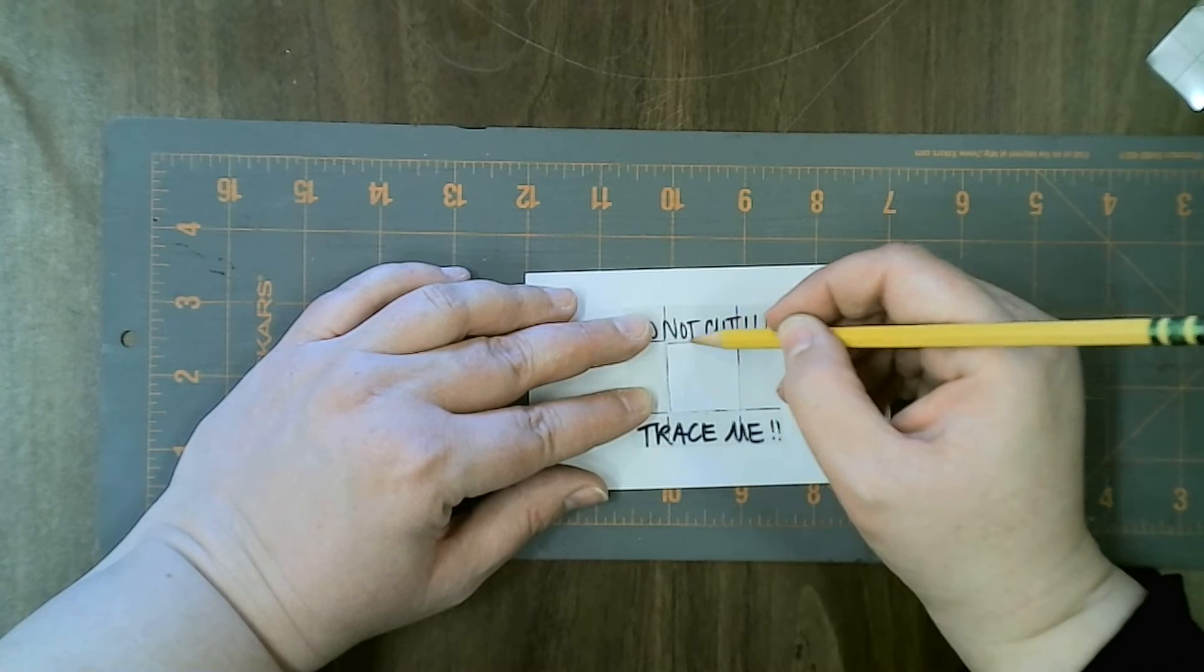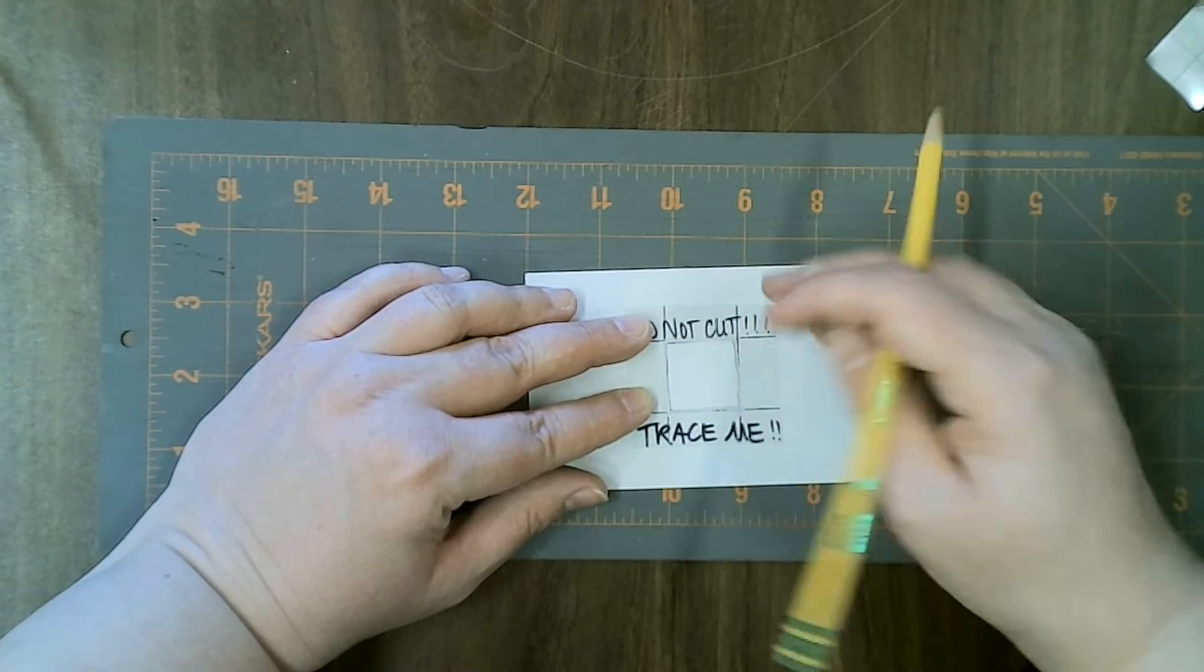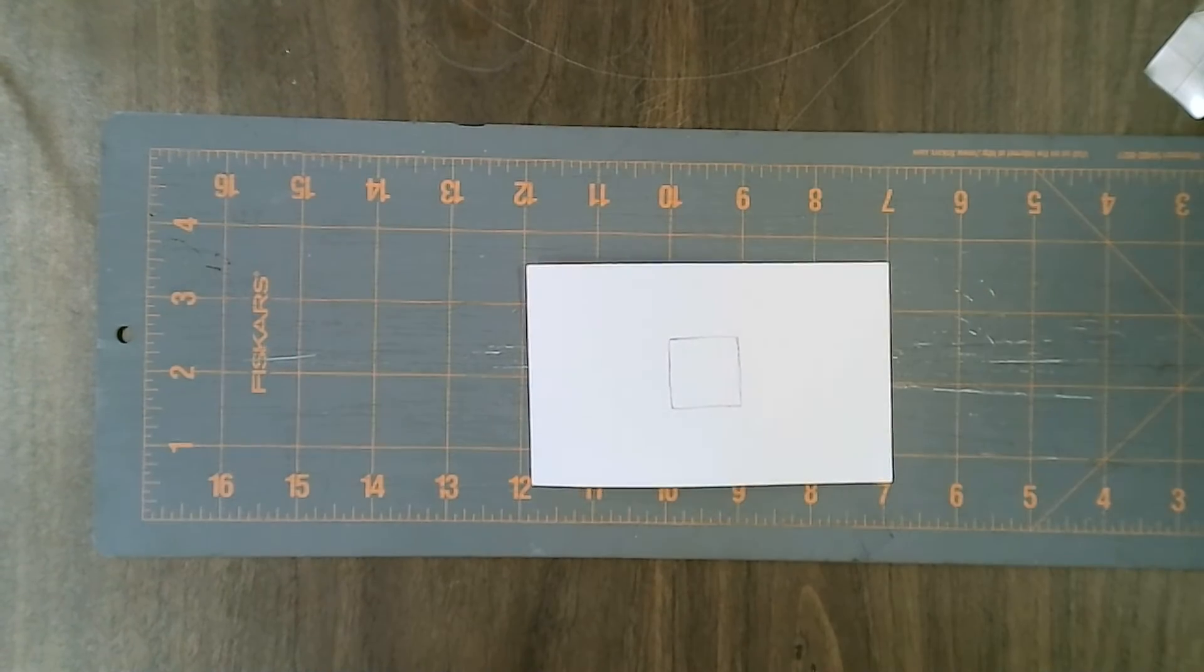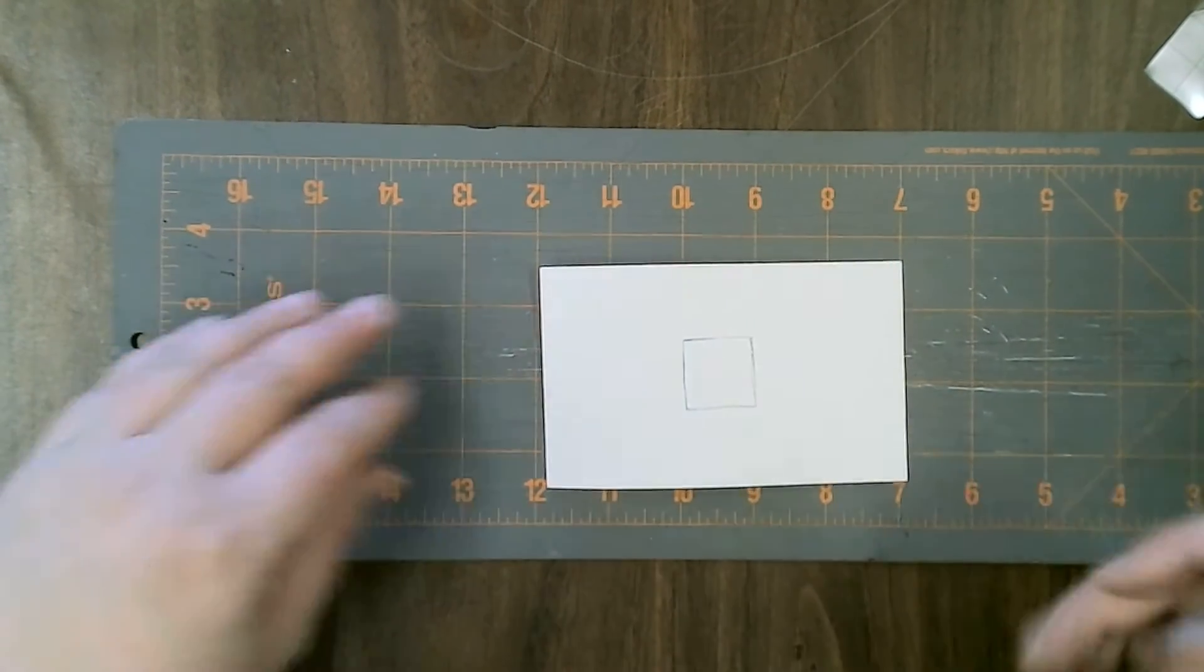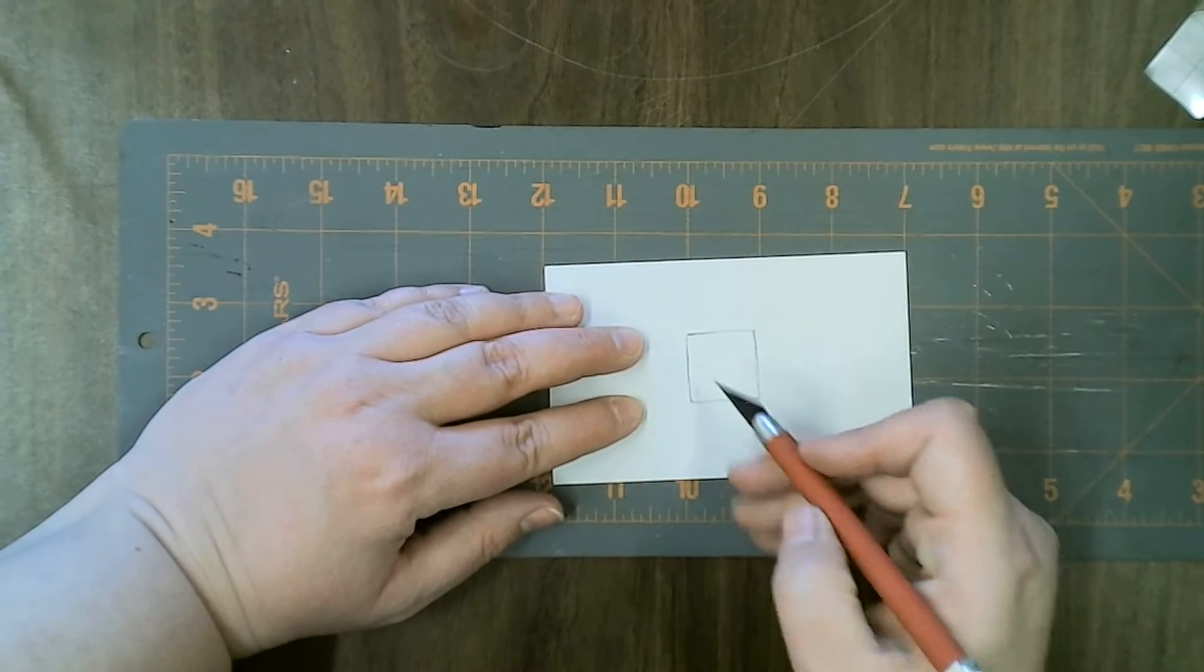I'm going to trace the inside. You want to be aware of where your fingers are, so I always put my fingers off to the side and cut towards myself. Just like when you cut your mats, you want to cut a little bit above the line and a little bit below.